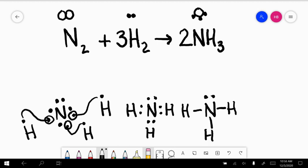So if you have three hydrogen molecules reacting with one nitrogen molecule, you're going to form two ammonias like such.